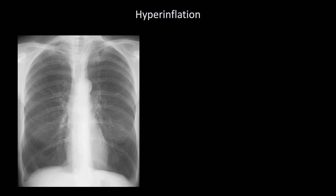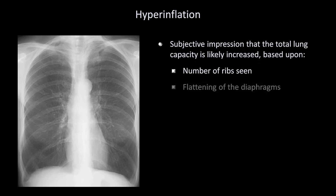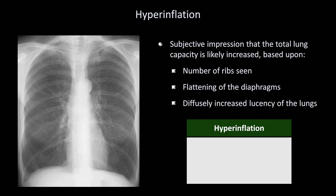In contrast to low lung volumes, we can instead see hyperinflation, which in my experience is less common. There is no widely applied precise definition of hyperinflation on x-ray. Instead, the term refers to a subjective impression that the total lung capacity is likely increased if measured by pulmonary function tests. This subjective impression is based upon the number of ribs seen, flattening of the diaphragms, and a diffusely increased lucency of the lungs. Hyperinflation has a very short and specific differential diagnosis: it is most commonly seen in COPD, and can also occur occasionally in asthma, but only during acute exacerbations.